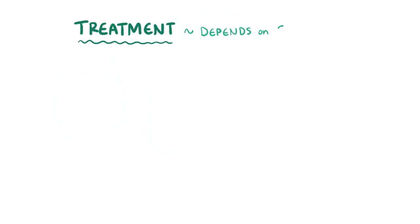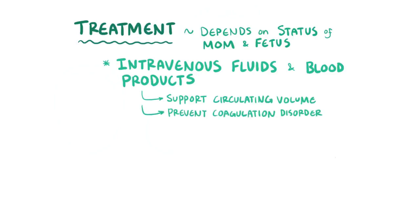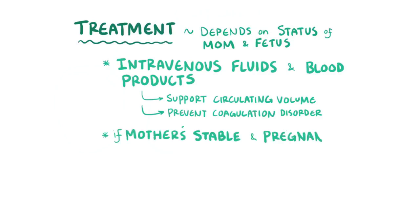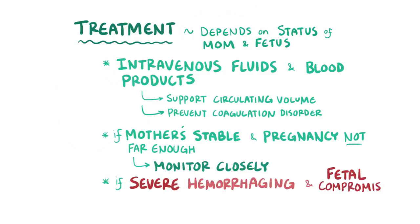Treatment depends heavily on the physiologic status of both the mother and the fetus, as well as the gestational age of the fetus. The main approach is to use intravenous fluids and blood products to support the circulating volume and prevent a coagulation disorder from causing problems. If the mother and fetus are stable and the pregnancy is not far enough along, then it might be ideal to monitor the pregnancy closely while the fetus develops. Alternatively, if the hemorrhage is severe or if there's evidence of fetal compromise, then an emergency cesarean section might be needed.